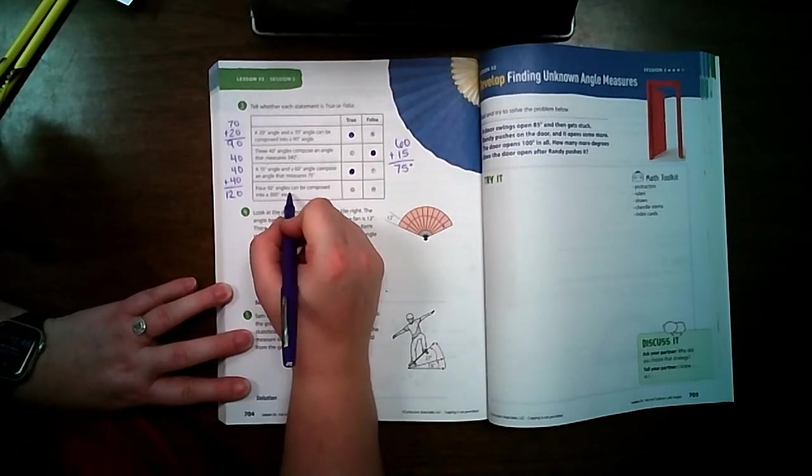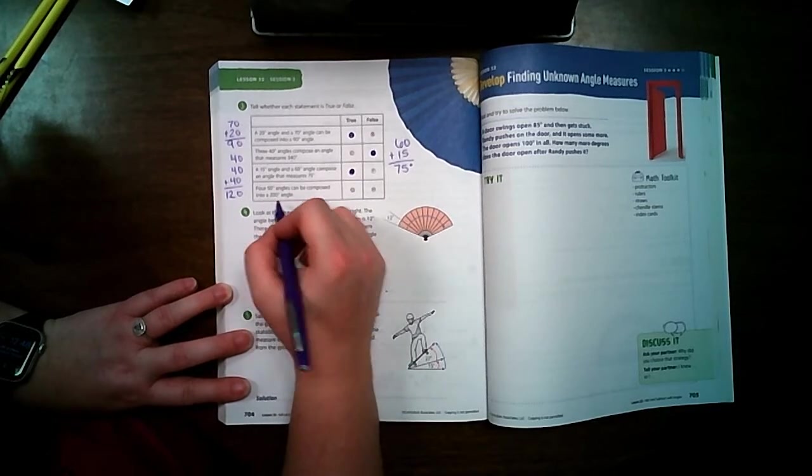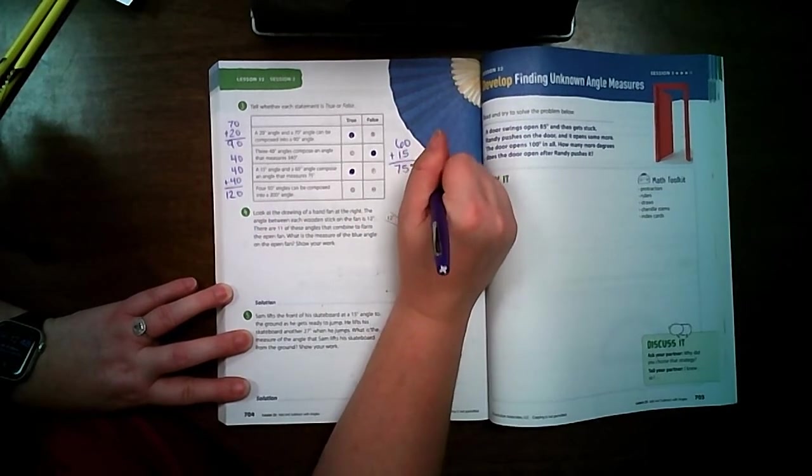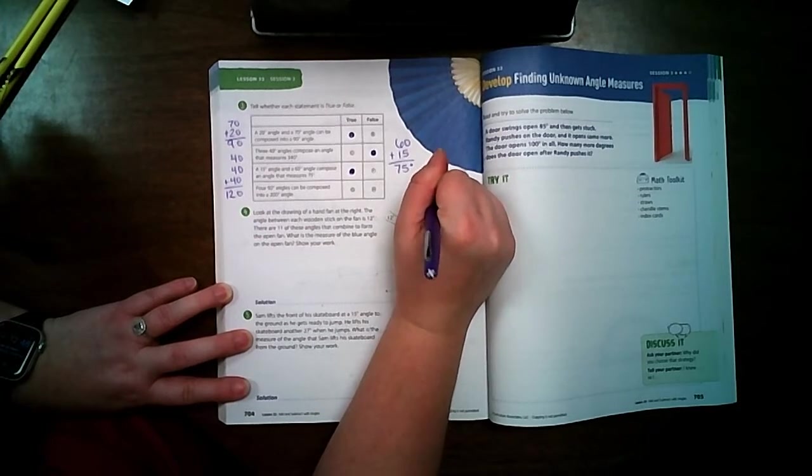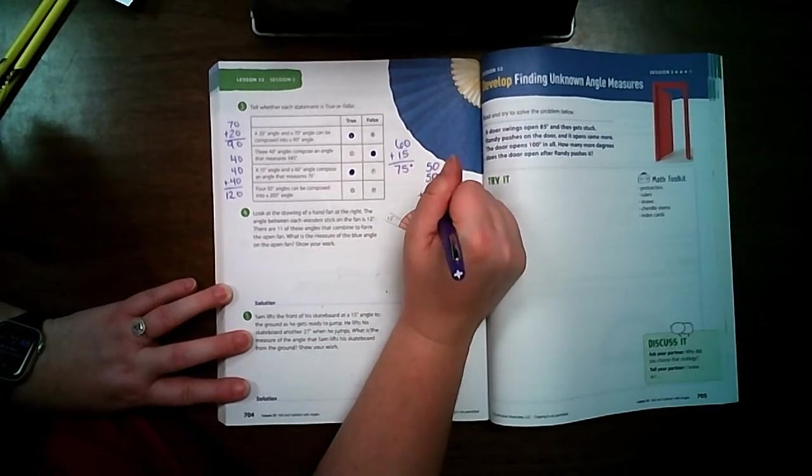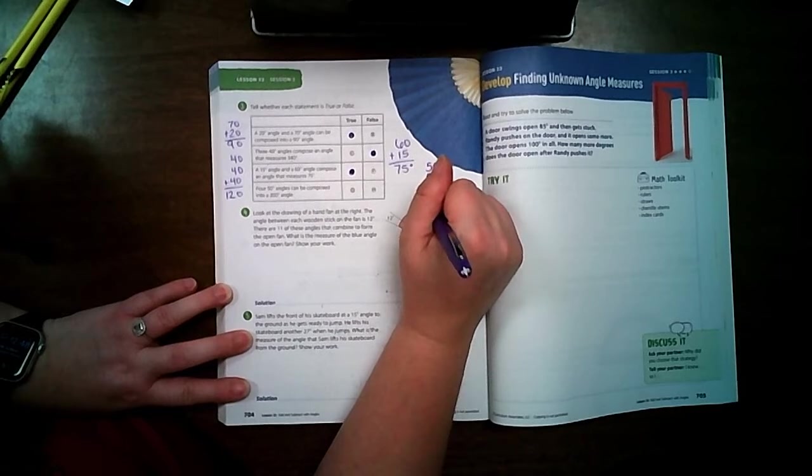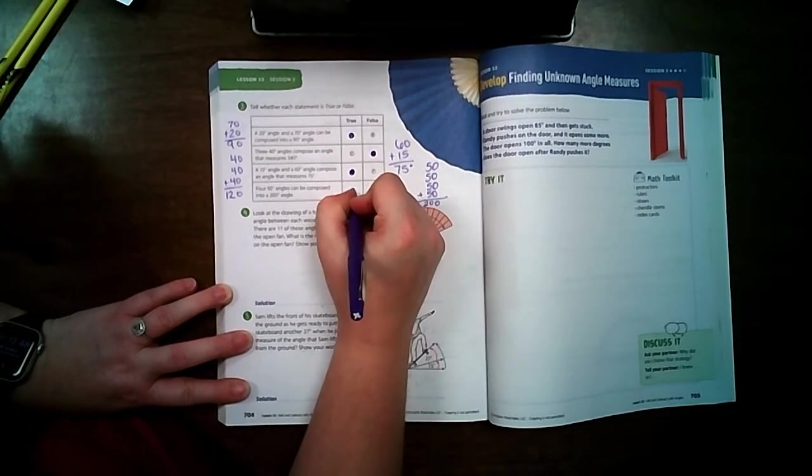Four 50 degree angles can be composed into a 200 degree angle. So 1, 2, 3, 4, 0, 5, 10, 15, 20. So that one is true. 200 degrees.